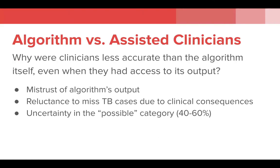One question this raises is why assisted clinicians who had access to the algorithm's output were less accurate than the algorithm alone. Possible explanations include a lack of confidence in the algorithm's output as well as an understandable reluctance to miss positive TB cases given the increased clinical consequences compared to missing a negative case. There is also a possibility that the presence of a possible category for cases with estimated probabilities near 50% did not give clinicians enough guidance. It would be interesting to see whether including exact probabilities resulted in assisted clinician performance closer to that of the algorithm alone.